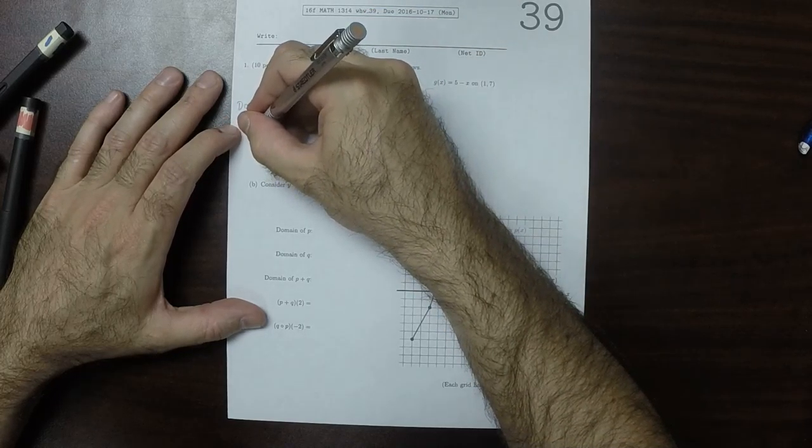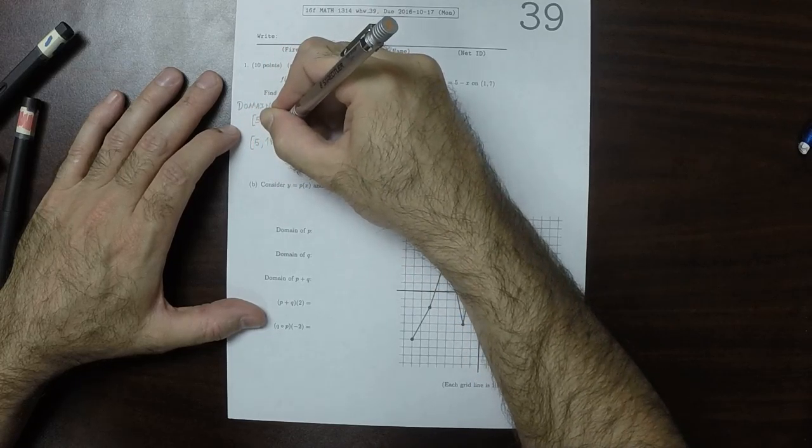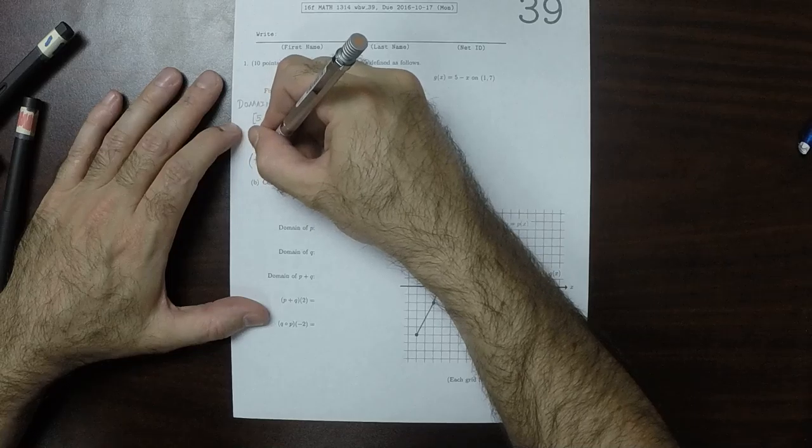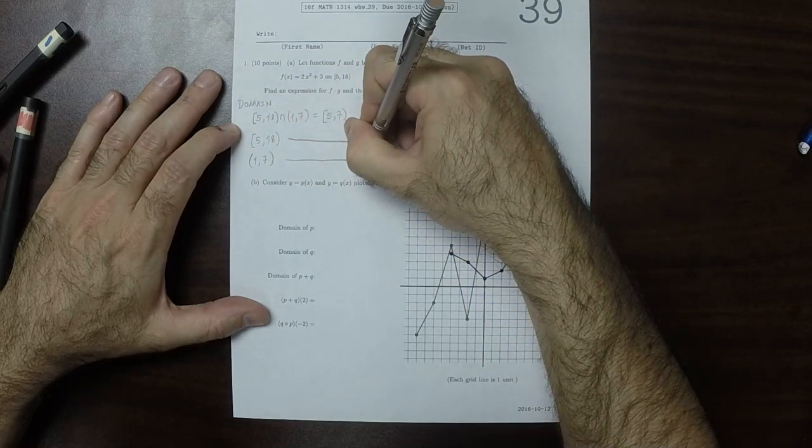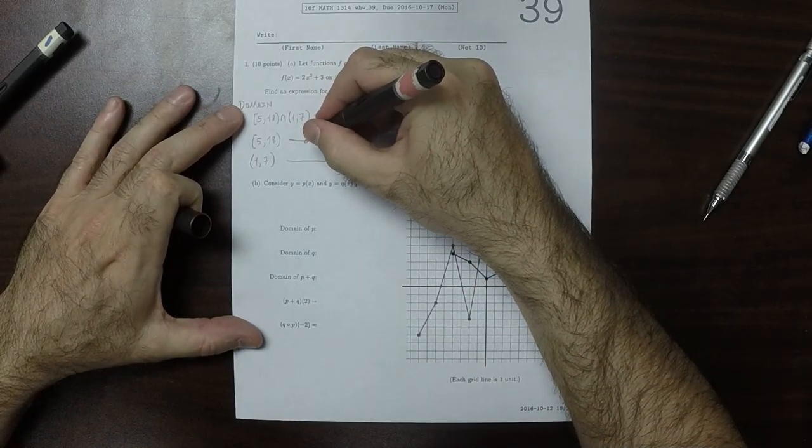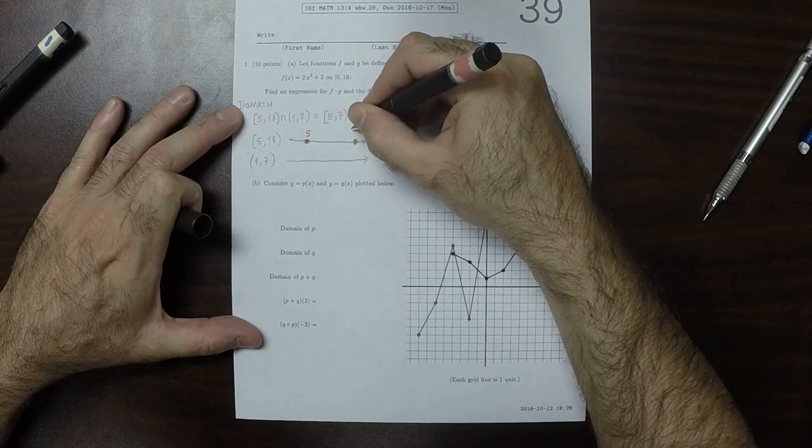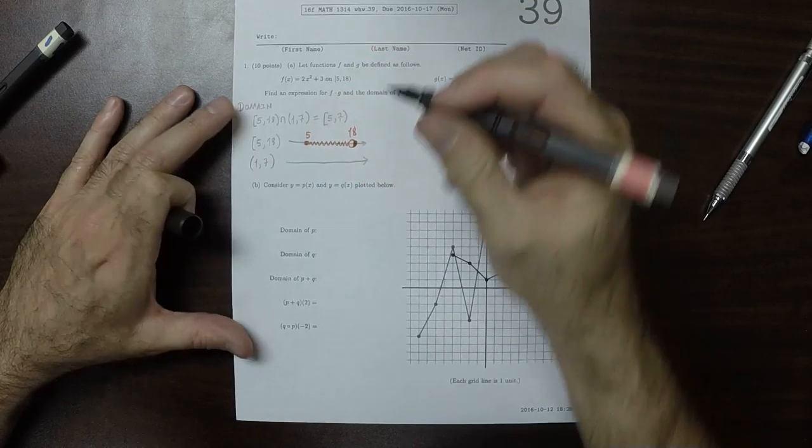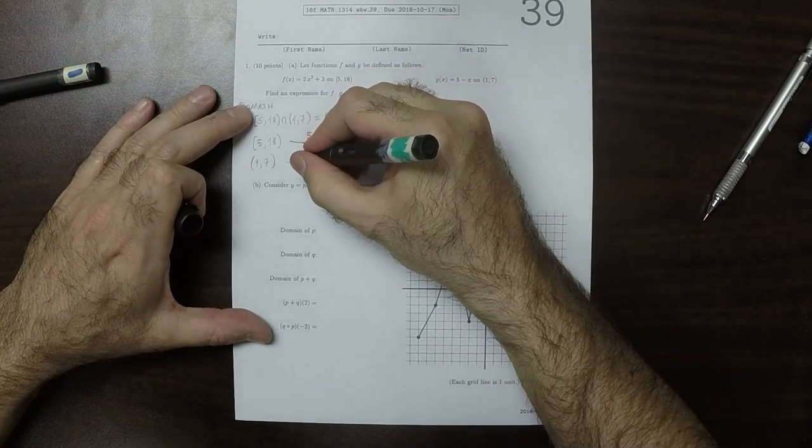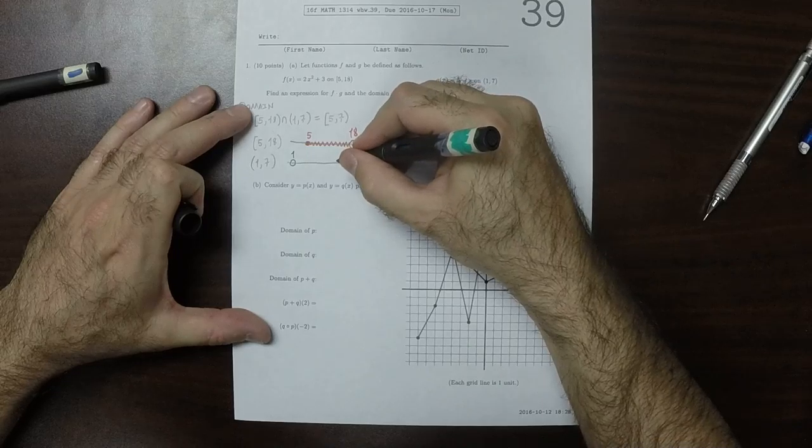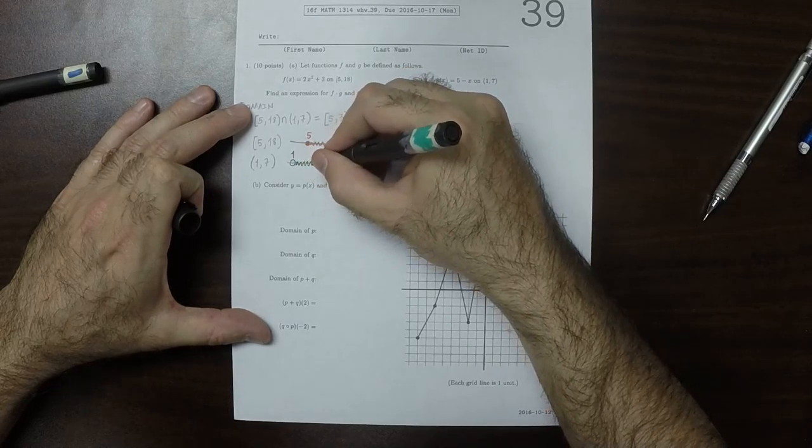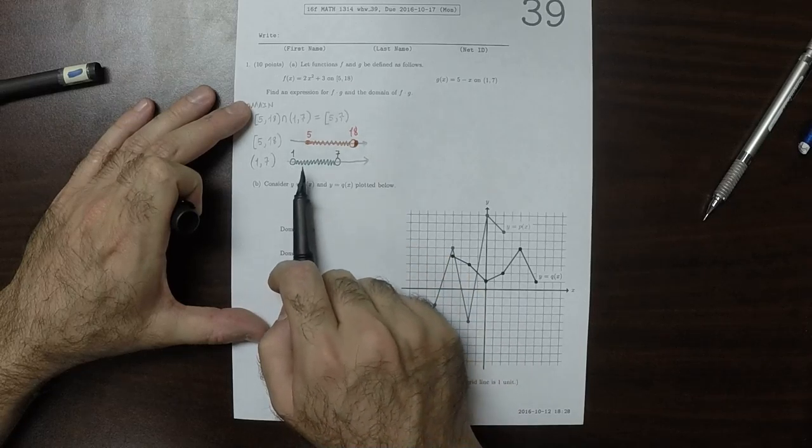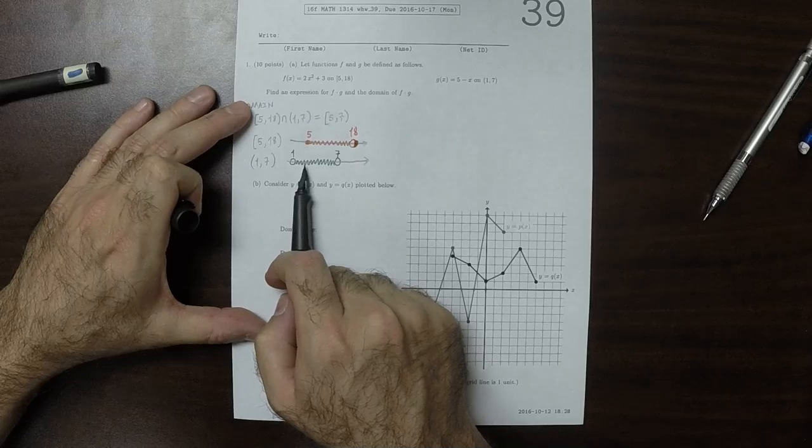So to see that that's the case, we can do 5 to 18 on a number line, and we can do 1 to 7 on another number line. So 5 to 18, that should be open, so 18. And then 1, open, to 7, open. So these numbers 1, 5, 7, and 18 are in the correct left to right order. So everywhere we have a red and a green point is 5 to 7, including 5 but not including 7.